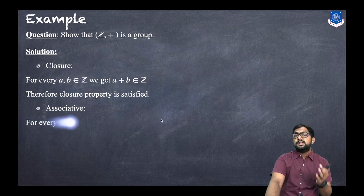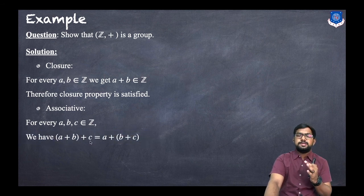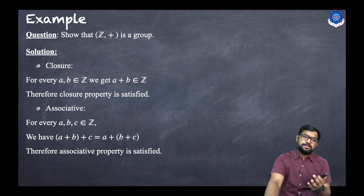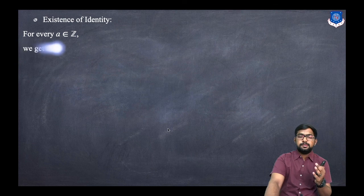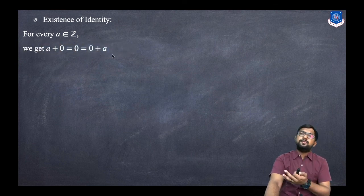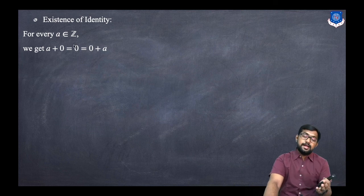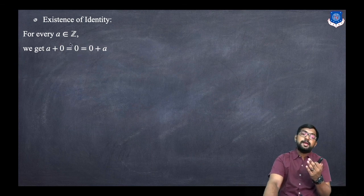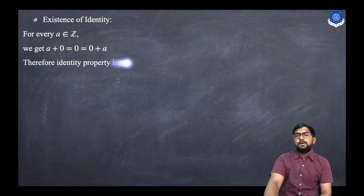For the associative property: for every three elements A, B, C belonging to Z, we have (A + B) + C = A + (B + C), so we can change the brackets. Therefore the associative property is satisfied. Now for existence of identity: for every A belonging to Z, we get A + 0 = A = 0 + A, so 0 is the identity element. Therefore the identity property is satisfied.